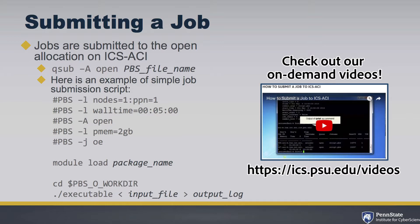Jobs are submitted to the open allocation, so you can do a Q-Sub — that's a Q-Sub -A. That dash capital A is just for the allocation or location where the job is going to be submitted. In this case, the word 'open' after that indicates that it's going to be submitted to the open queue, or the open allocation on ACI.